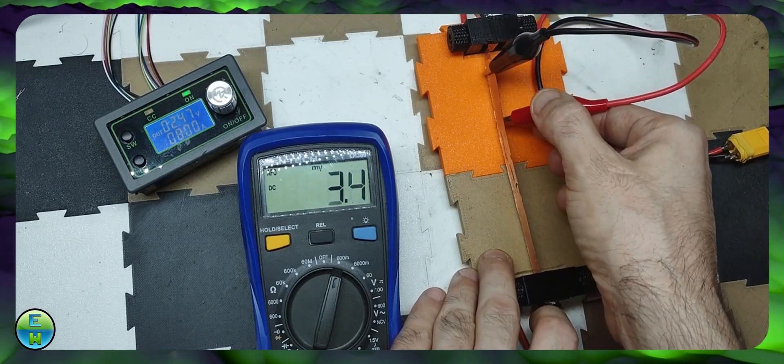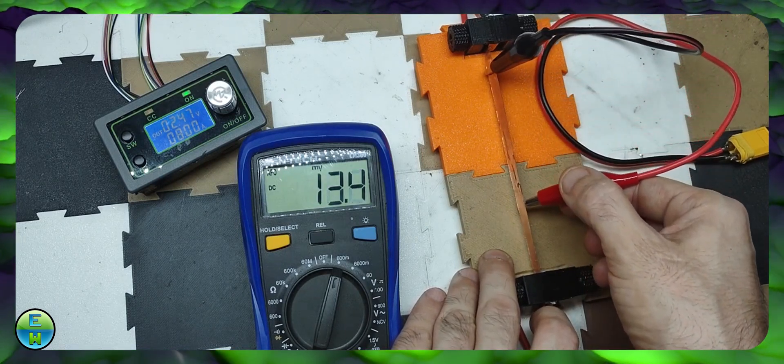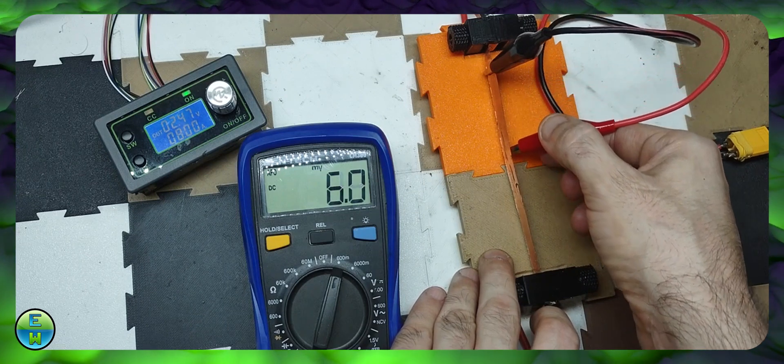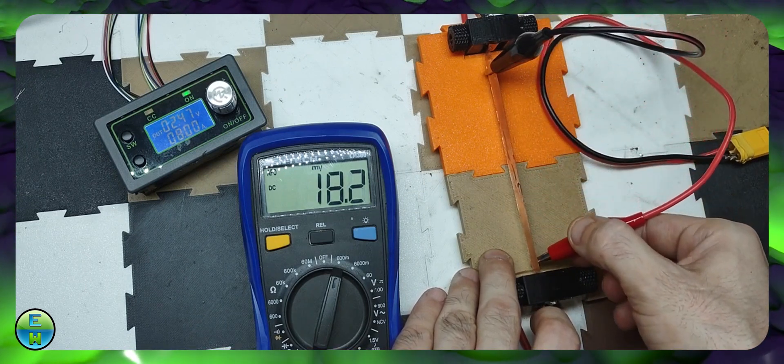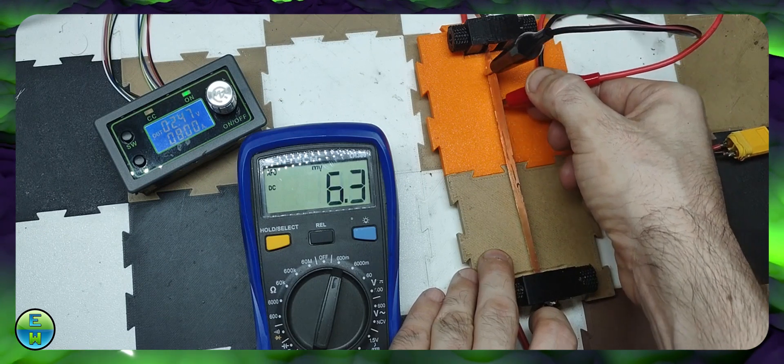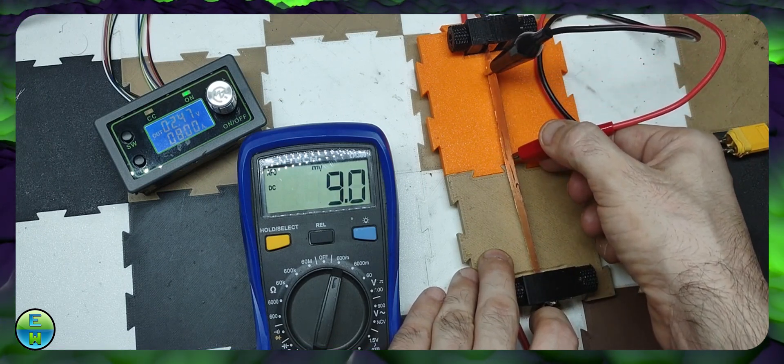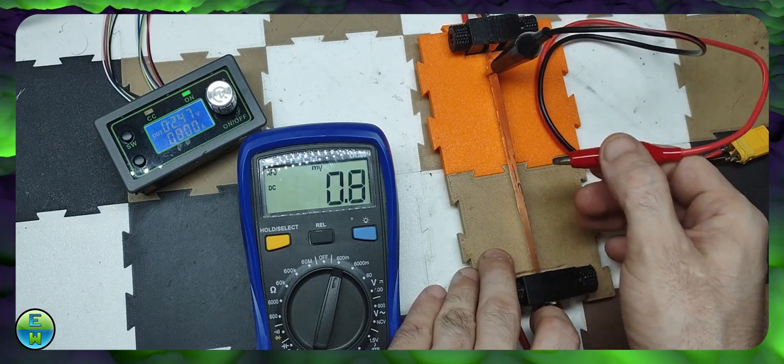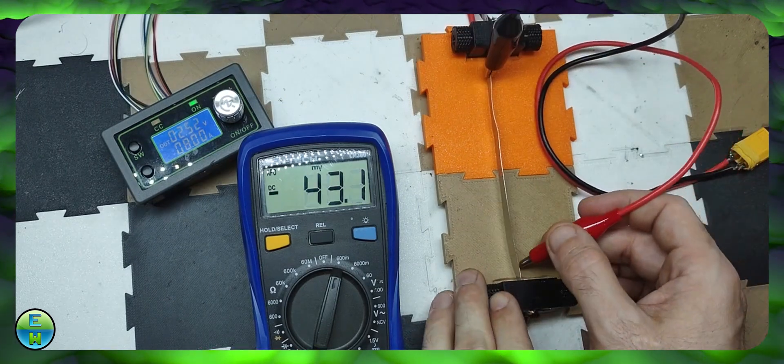Every material has its own characteristic resistance. The material itself is just one factor. The geometry of the material is a major factor. If you have double the distance, you'll have double the resistance. If you have double the thickness, you'll have half the resistance. And here's the same test with the nickel.